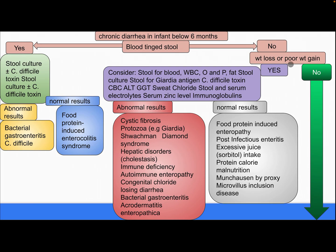If there is no blood in the stool, is there weight loss or poor weight gain? If yes, consider stool for blood, white blood cells, ova and parasites, fat, stool culture, stool for Giardia antigen, C. difficile toxin, CBC, ALT, GGT, sweat chloride, stool and serum electrolytes, serum zinc level, and immunoglobulin. If results are abnormal, differential diagnosis includes cystic fibrosis, protozoa/Giardia, Shwachman-Diamond syndrome, hepatic disorder/cholestasis, immune deficiency, autoimmune enteropathy, congenital chloride-losing diarrhea, bacterial gastroenteritis, and acrodermatitis enteropathica.